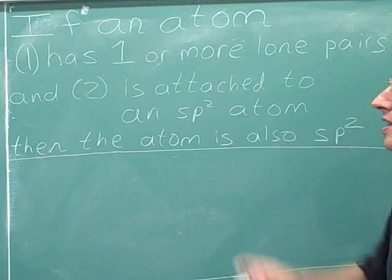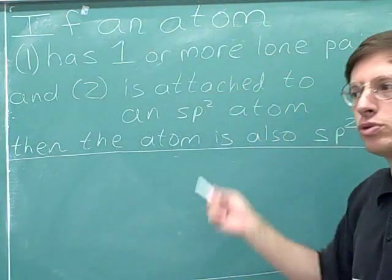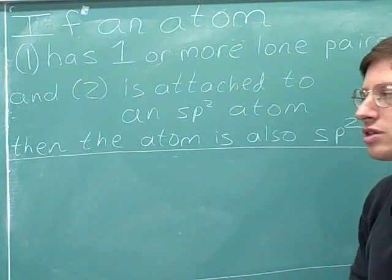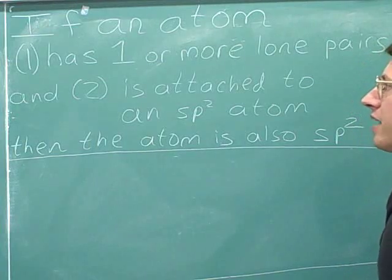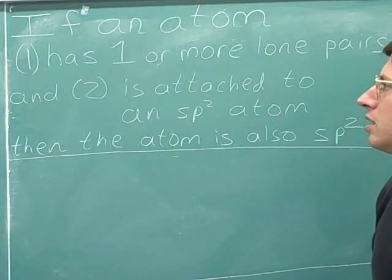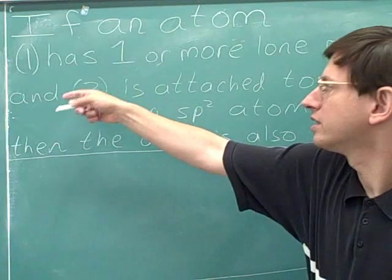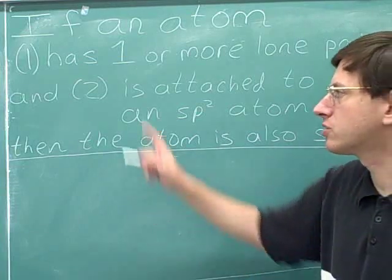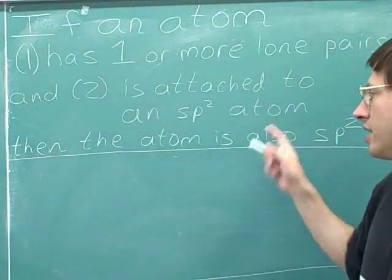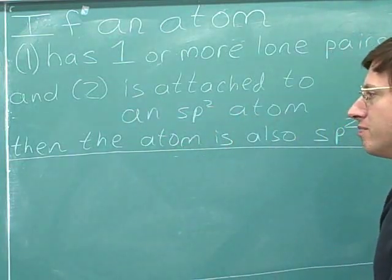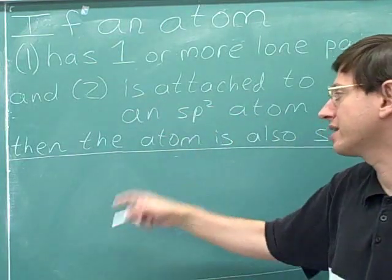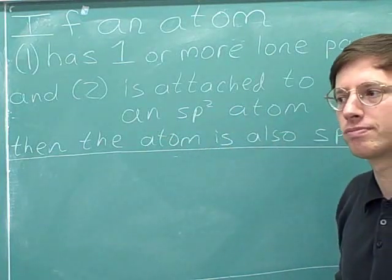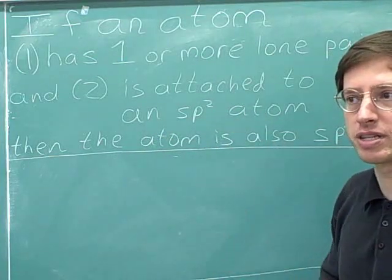Again, this is the exception to the rule for determining hybridization. If an atom: one, has one or more lone pairs, and two, is attached to an sp2 atom, then the atom is also sp2. Let's look at some examples.